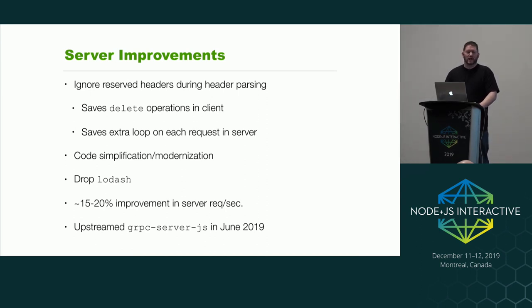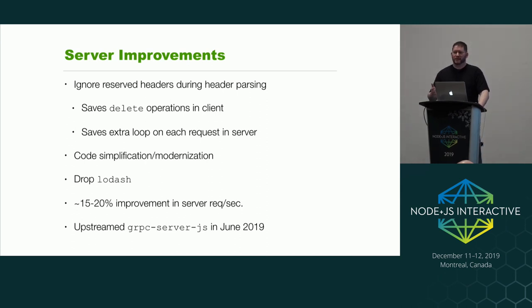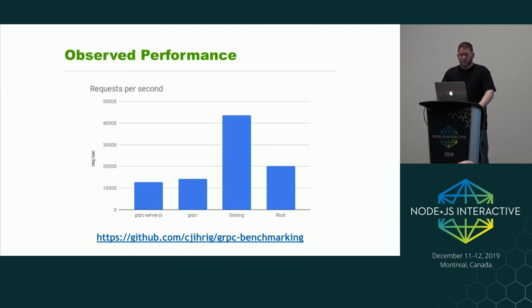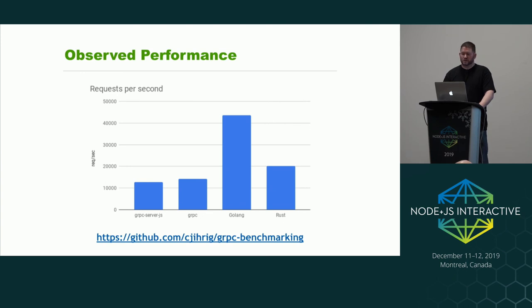Those improvements led to roughly 15–20% performance improvements. I presented this work at gRPC Conf last year, talked to one of the maintainers, and agreed to upstream the server to them. I did a lot of wrestling converting from JavaScript to TypeScript — it made me want to cry — but it finally got merged as of June this year. We also did benchmarking across gRPC-JS, the compiled add-on, Golang, and Rust. Unsurprisingly Golang and Rust were faster, but the performance difference between pure JavaScript and the compiled add-on was about where I expected.